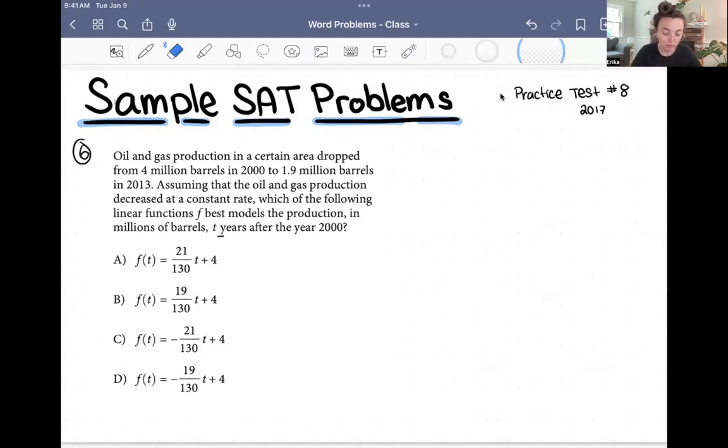So oil and gas production in a certain area dropped from 4 million barrels in 2000 to 1.9 million barrels in 2013. Assuming that the oil and gas production decreased at a constant rate, which of the following linear functions F best models the production in millions of barrels T years after the year 2000?